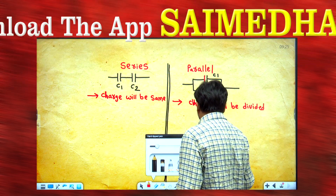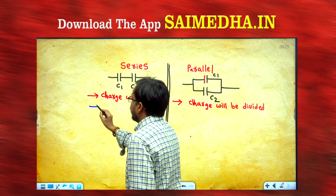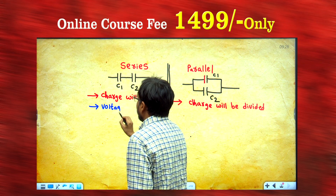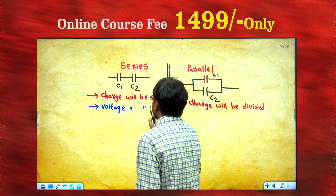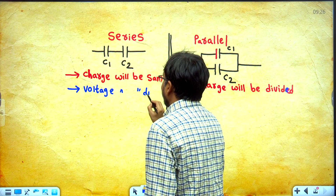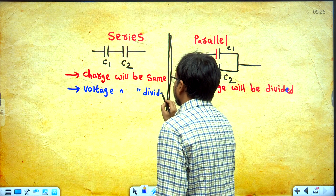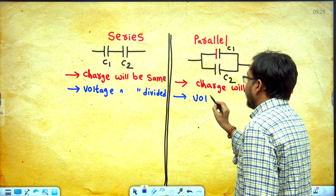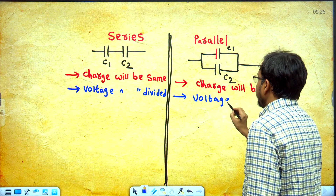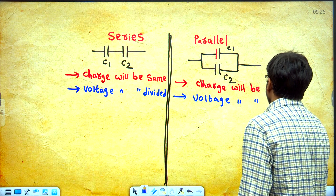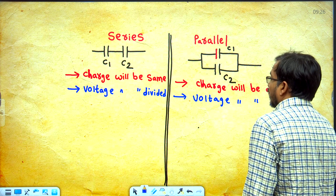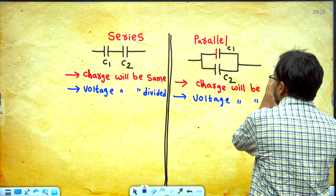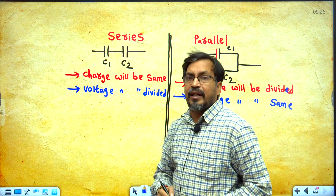Next concept: Voltage. Voltage will be divided when the two capacitors are in series. Voltage will be same when the two capacitors are in parallel.